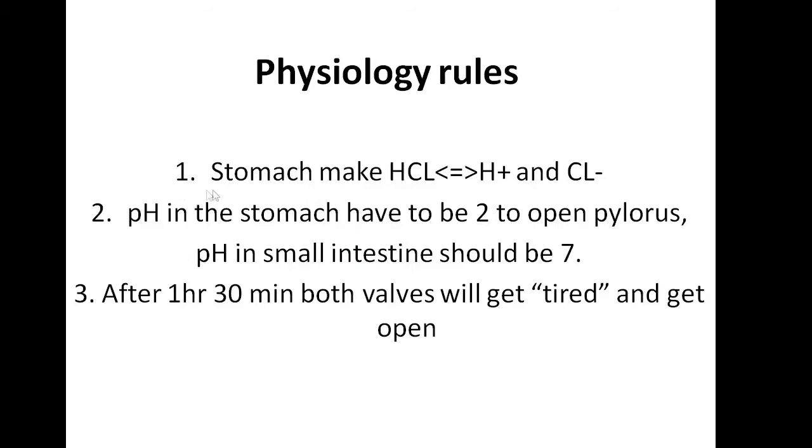Rule number one. Stomach will produce hydrochloric acid, which will dissociate there in the stomach into hydrogen ion and chloride anion. This hydrogen ion will determine pH or acidity in the stomach and it's going to be 2. It's very important to have this high acidity in the stomach to digest protein.